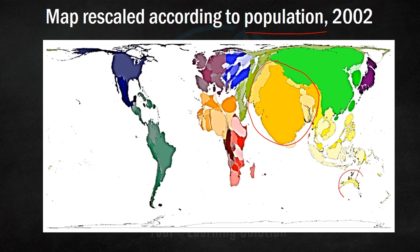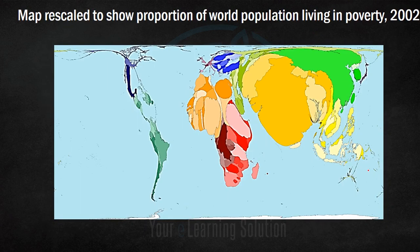Similarly, Australia, which is actually quite big in terms of geographical area, in terms of population proportion it is very small here. Now, let's look at another map which shows the proportion of world population living in poverty. Again, the map has been rescaled — this is not how the world looks in terms of geographical area, but the regions which have a large poor population have been expanded to show their prominence.